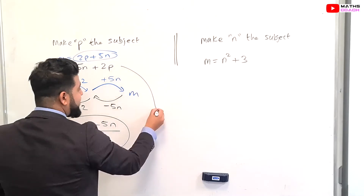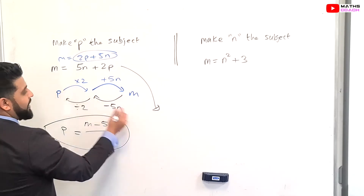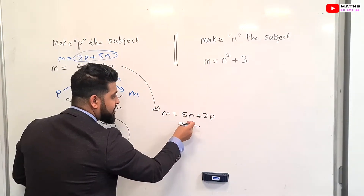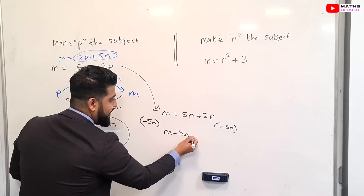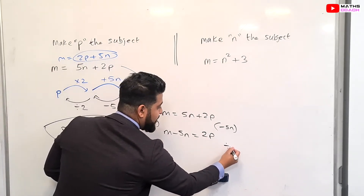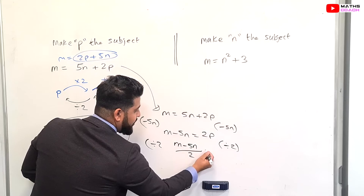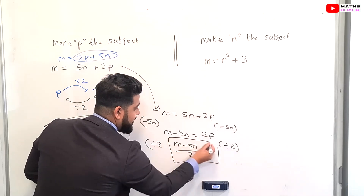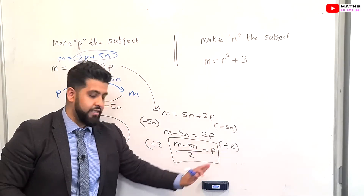I'll show this again using the conventional method. Starting with M = 5N + 2P, we subtract 5N from both sides, leaving M − 5N = 2P. Then divide both sides by 2: we get (M − 5N) / 2 on the left, and 2P ÷ 2 = P on the right. So P = (M − 5N) / 2. You could write P equals first and then (M − 5N) over 2 on the other side.